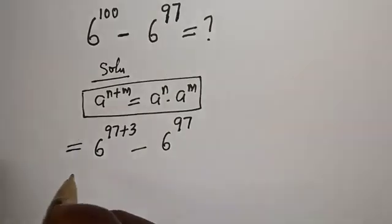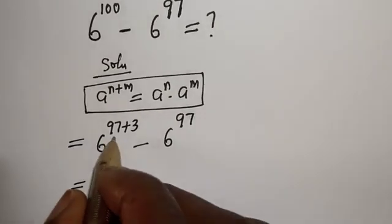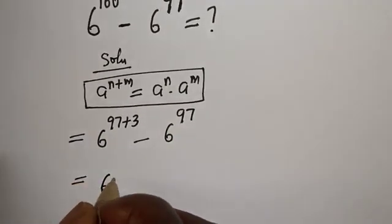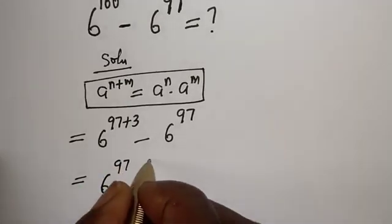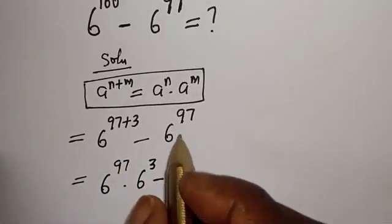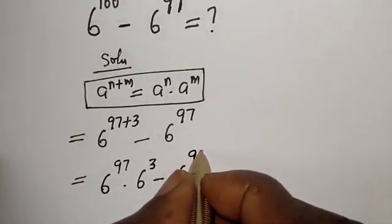From this rule, this can be written as 6 raised to power 97 multiplied by 6 raised to power 3, minus 6 raised to power 97.